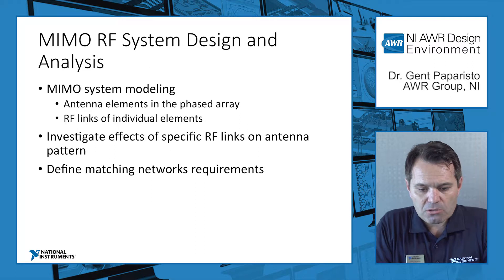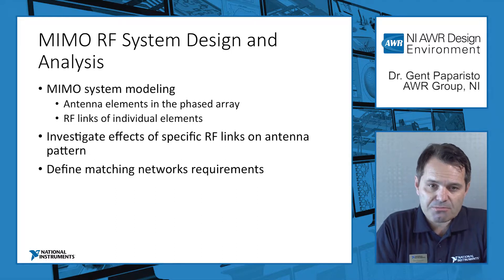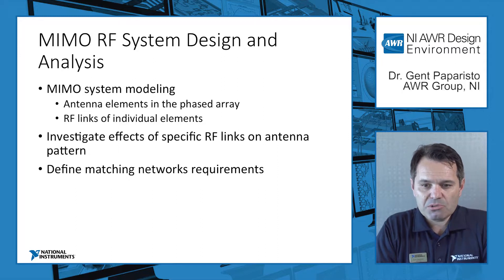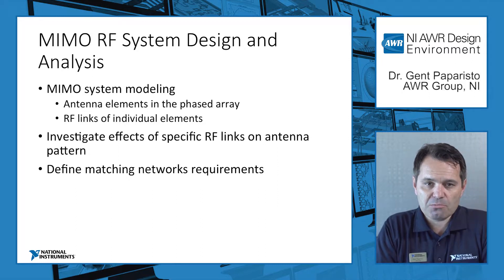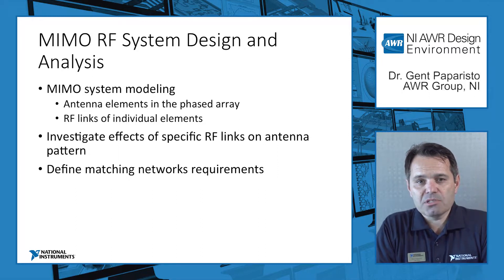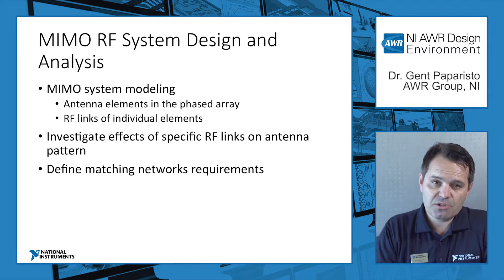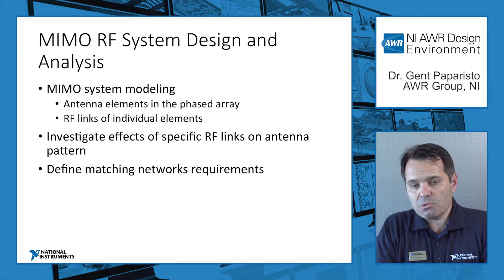Focusing on MIMO RF systems, MIMO system modeling must include the antenna elements in the phased array as well as the RF links of individual elements. Each element has its own RF link, so we really need to include RF link impairments in the overall antenna performance to get meaningful results close to final measured results. We need to investigate effects of specific RF links on the overall antenna pattern and use this to define matching networks.